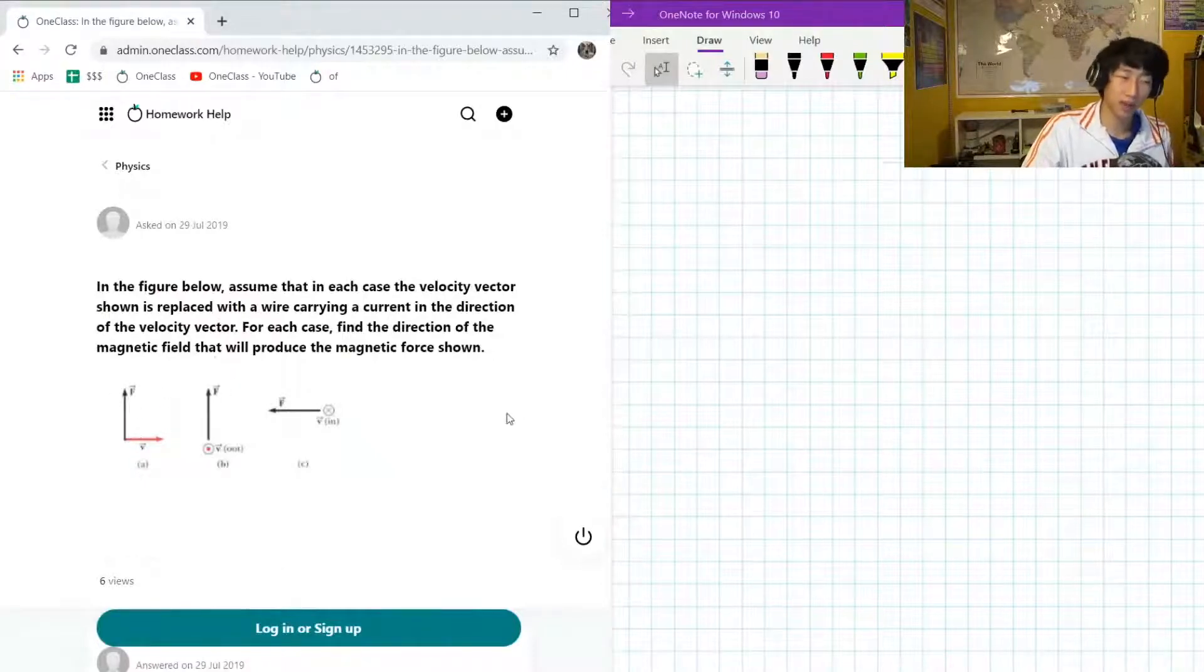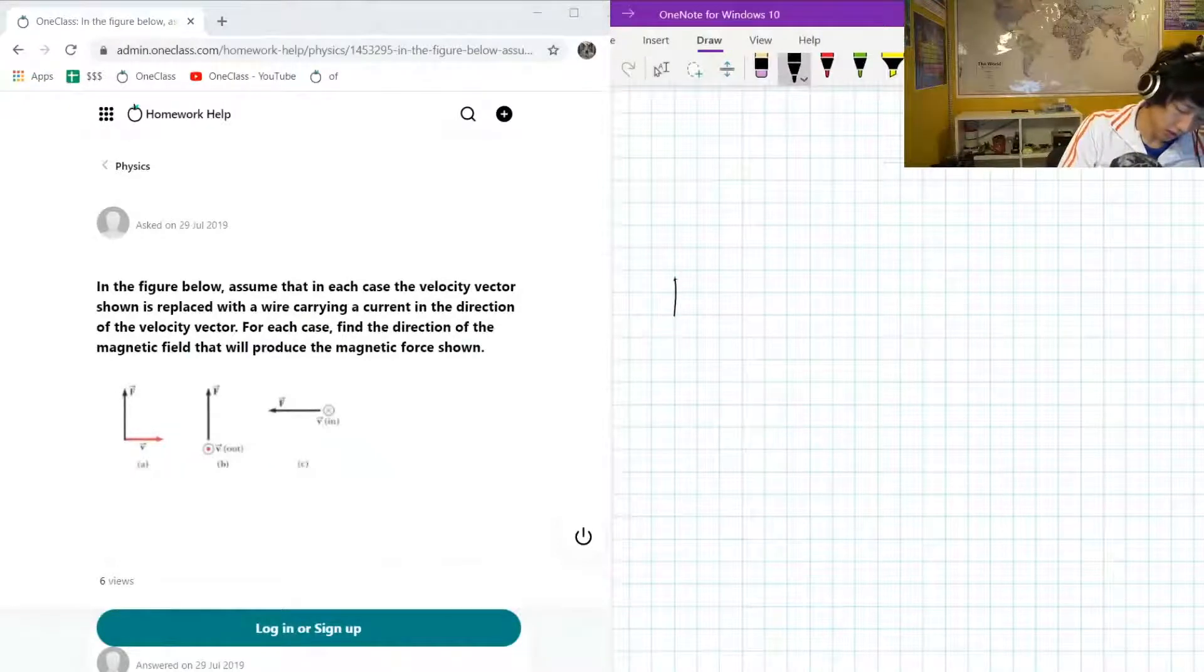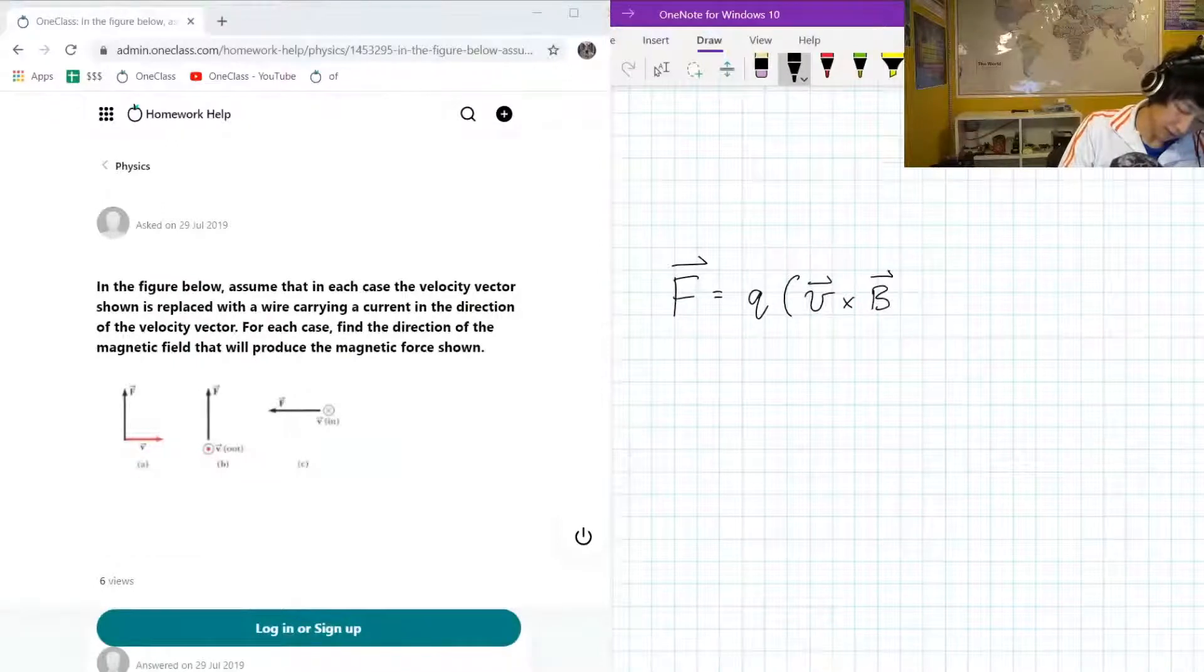Okay, so I'll redraw these diagrams when we get there. The main principle that we want to apply for this situation is the magnetic force on a moving charge equation. So the equation looks like this: F is equal to Q times the cross product of the velocity cross product the magnetic field. Force, charge.